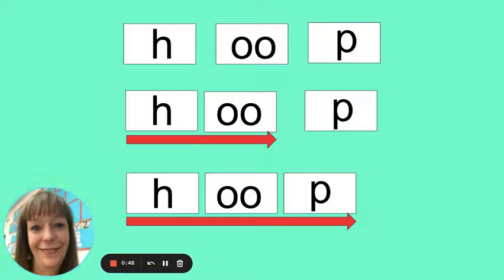All right. Let's try this one with an O-O, OO sound. Say the individual sounds first. H, OO, P. Now blend the first two sounds. HOO, P. Now blend them all. Hoop. The word is hoop. Like a hula hoop.